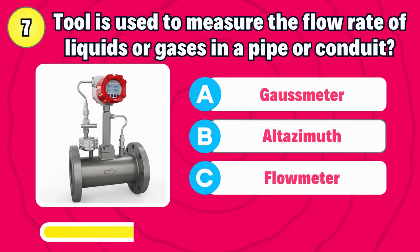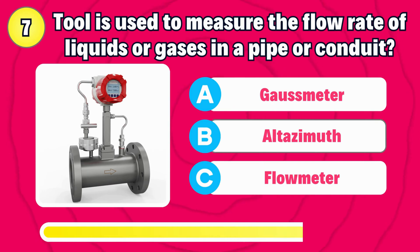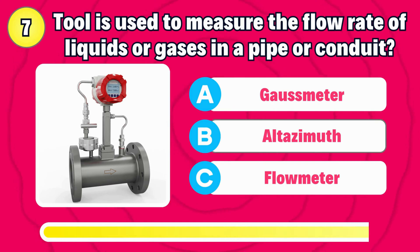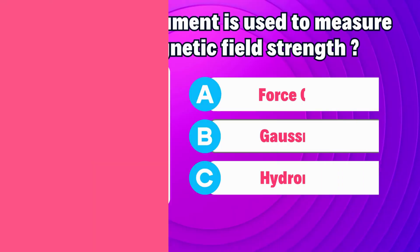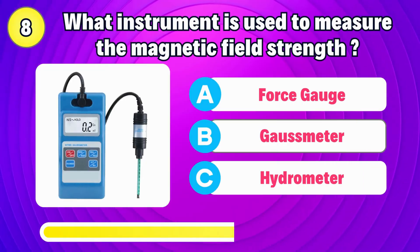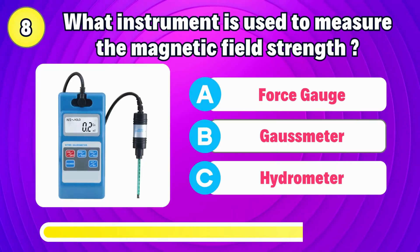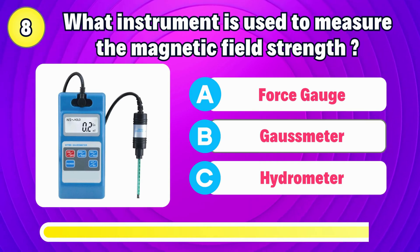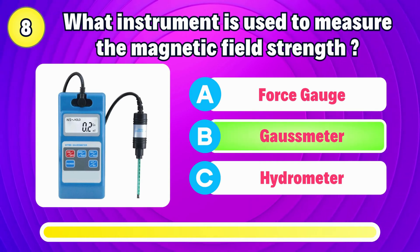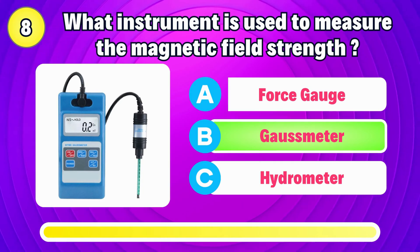What tool is used to measure the flow rate of liquids or gases in a pipe or conduit? That's right, it's flowmeter. What instrument is used to measure the magnetic field strength? Correct answer is gaussmeter.